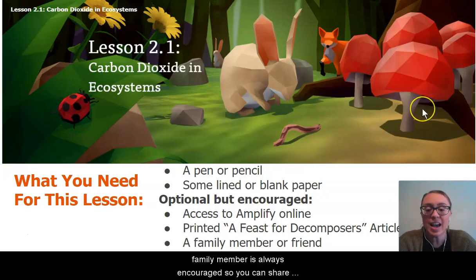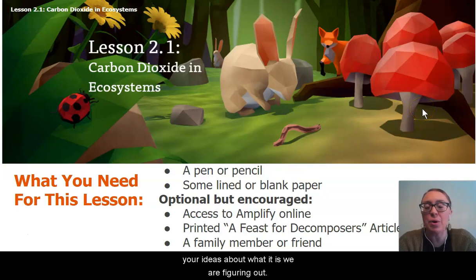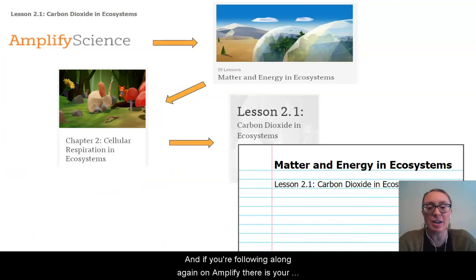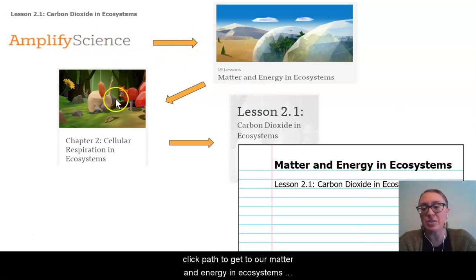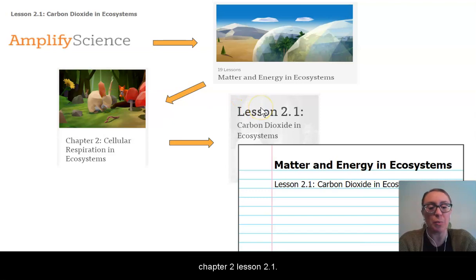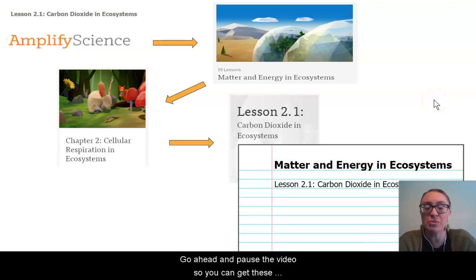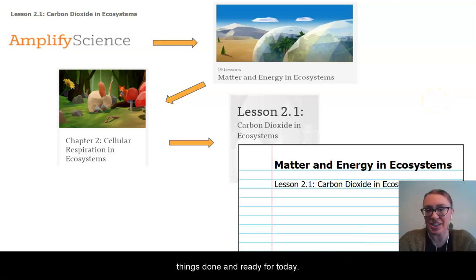And lastly, a friend or family member is always encouraged so you can share your ideas about what it is we are figuring out. If you're following along on Amplify, there is your click path to get to Matter and Energy and Ecosystems, Chapter 2, Lesson 2.1. And on your paper, here is how I would like you to have that set up. Go ahead and pause the video so you can get these things done and ready for today.